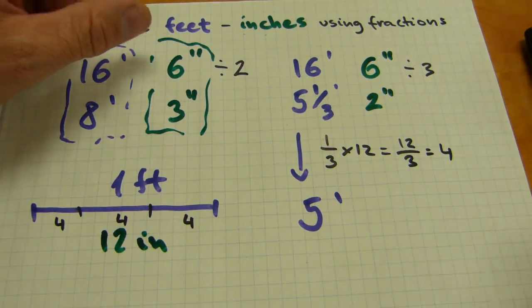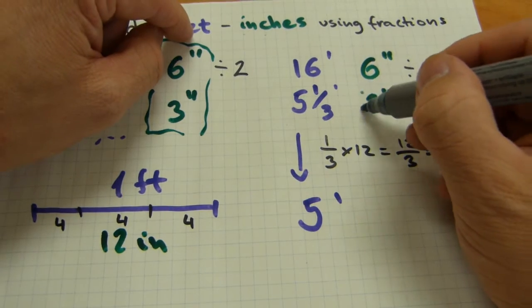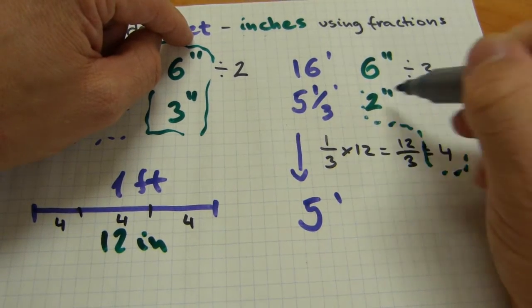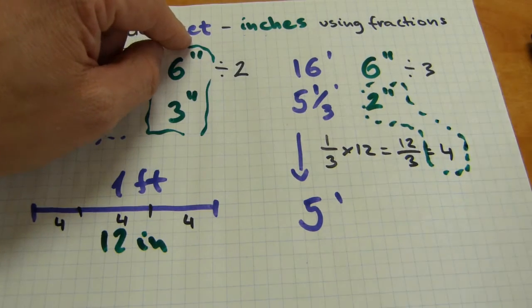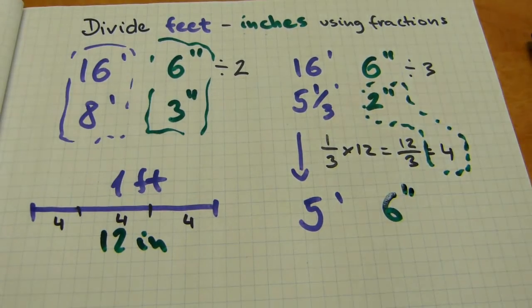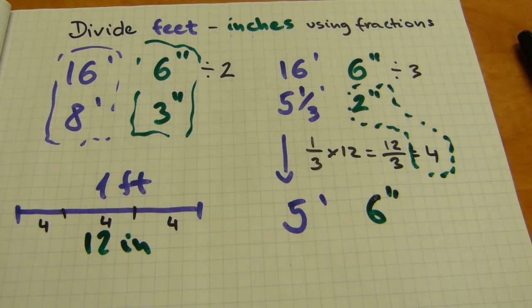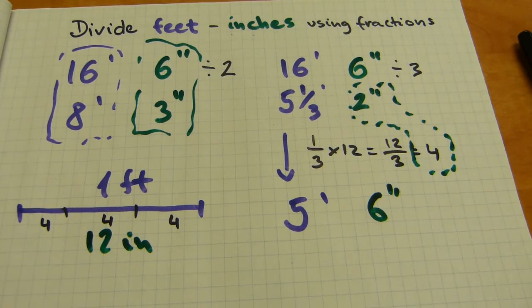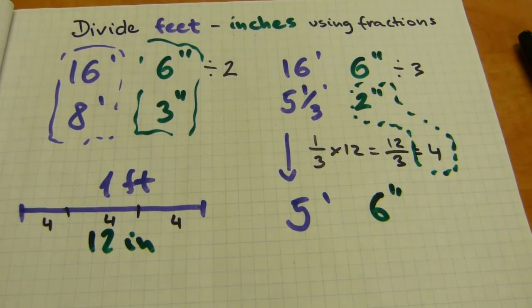This 4 inches needs to be added because this carries over into the inches column, so it needs to be added to whatever is already in the inches column. 4 plus 2, that's going to be 6 inches. Fairly straightforward. So that's 5 feet 6 inches, the answer to 16 feet 6 inches divided by 3. And that's what you do with the fractional feet.